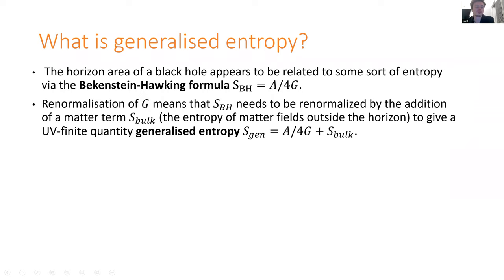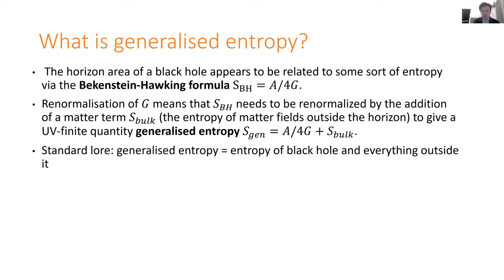There's a standard law that says this generalized entropy is in some way equal to the entropy of the black hole and everything else outside. The entropy outside and the entropy of the black hole are never well defined on their own, but together they give some finite thing which is counting the entropy of the whole black hole.